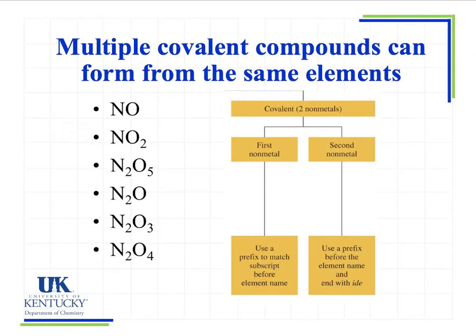So why do we need a system of nomenclature that distinguishes different covalent compounds from one another? Why can't we just do the same thing that we did for ionic compounds? Well, we don't have charges, so it doesn't allow us to predict the formulas. And when we look at covalent compounds, what we see is that there are so many different ways to combine two elements.